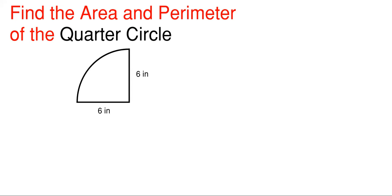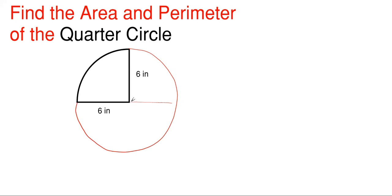A quarter circle is just one-fourth of an entire circle — basically a circle that has been cut into four equal parts. You would have this portion outlined in black, and the other portions here and here would all be the same, each of those being a quarter circle.